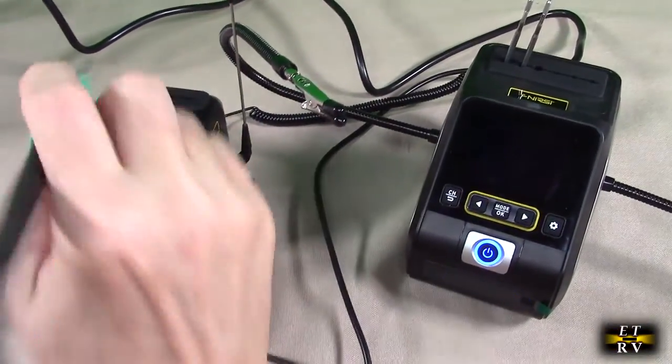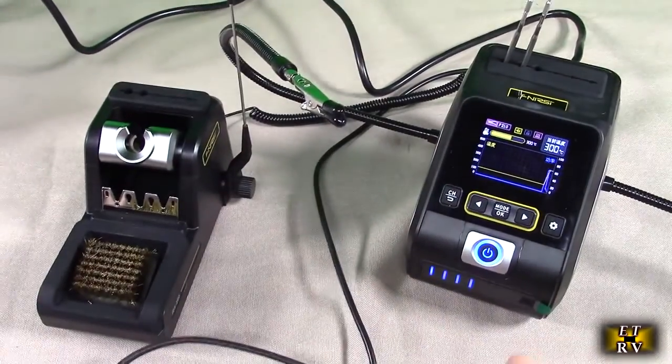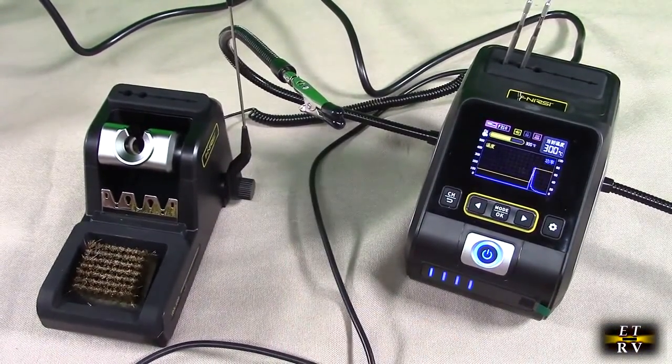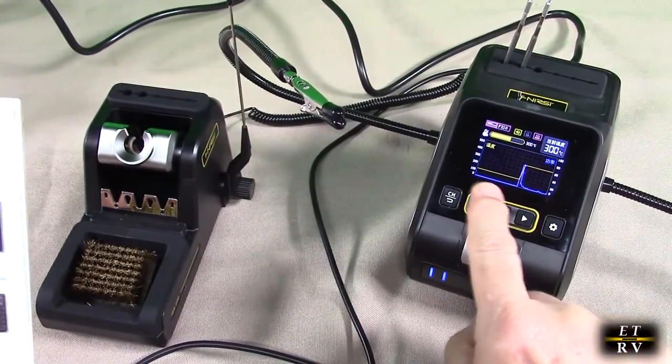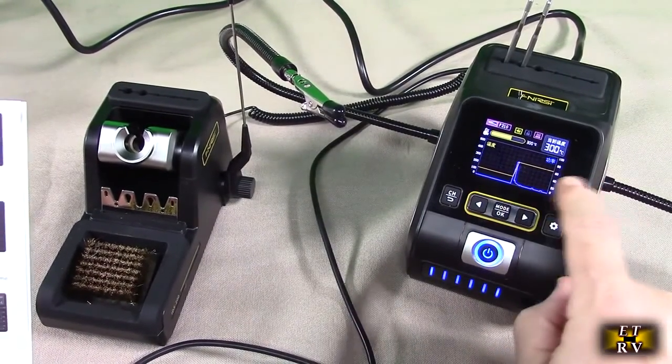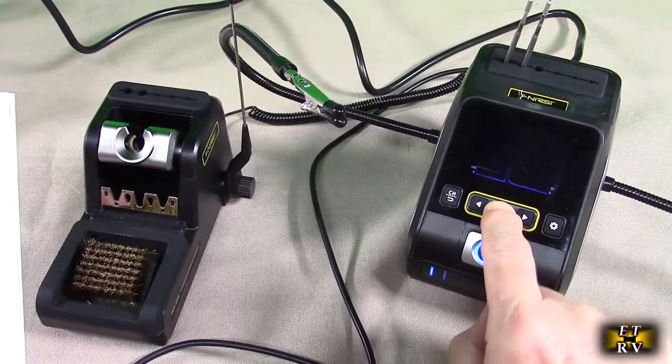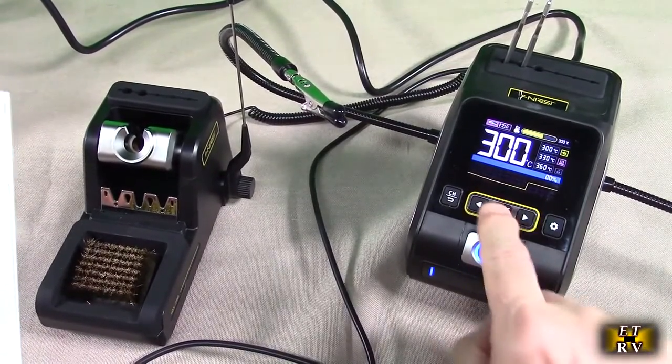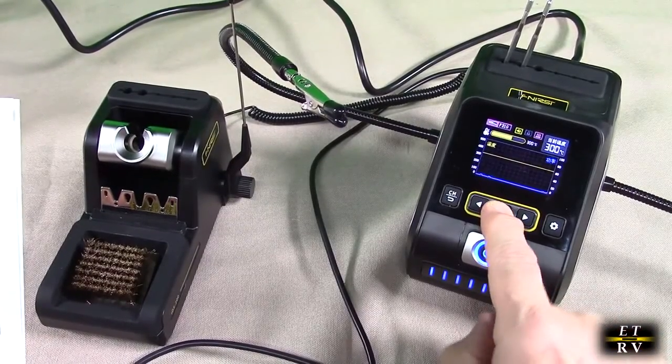Once you have the soldering iron on it'll engage the heating of the tip, then you have access to the modes. You can see right there it is showing you over time and what it's doing the temperature. There's another mode right there and a second mode right there, so you have a choice of looking at these modes to see what's going on on the display.